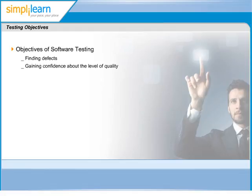Another objective is gaining confidence about the quality of the software application, and to provide information that helps in go/no-go decision-making for the next phase. Analysis of defects found in one phase can also help in identifying root causes of defects, and hence lead to prevention of defects in the following phases. Each type of testing also has its own specific objective to be met.